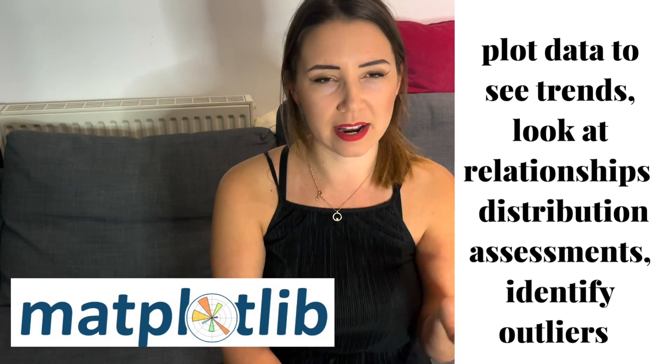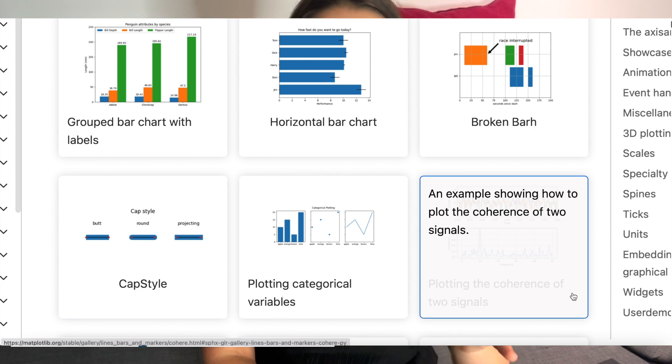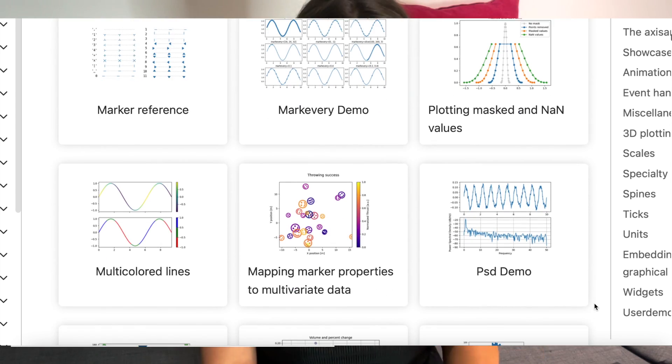Once you've used Pandas to wrangle your data and NumPy for numerical calculations, you want to plot the data to see what's going on. Matplotlib allows you to convert your data objects into graphs so you can see trends, look at relationships, examine the distribution of your data, and identify outliers. The basic functionality is very easy to pick up, but Matplotlib is also highly customizable for complex graphing. Learning to convert data into graphs via Matplotlib sets you up well for your data visualization journey.